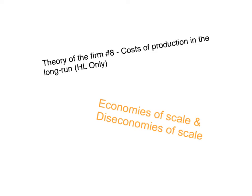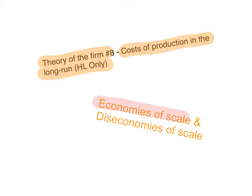This is video number 8 in the theory of the firm series. This video will focus on the costs of production in the long run. Remember this is the high level only component of the IB economics syllabus. The main focus will be explaining the factors that give rise to economies of scale and the factors that give rise to diseconomies of scale.